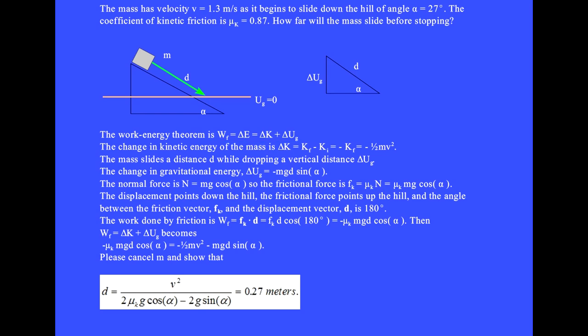The change in kinetic energy of the mass is delta K equals Kf minus Ki. But the final kinetic energy is zero because the mass isn't moving, so delta K equals minus one half mv squared. The mass slides a distance d while dropping a vertical distance; this side of the triangle is opposite the angle alpha, so the vertical drop equals d sine alpha. The change in gravitational potential energy delta Ug equals minus mgd sine alpha.